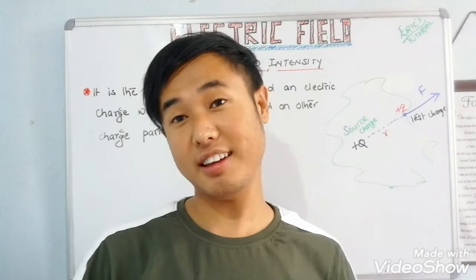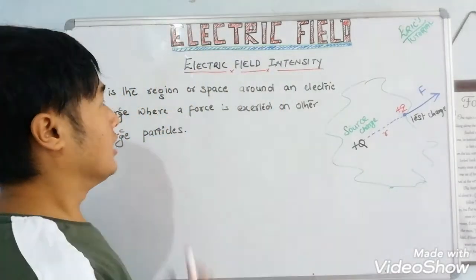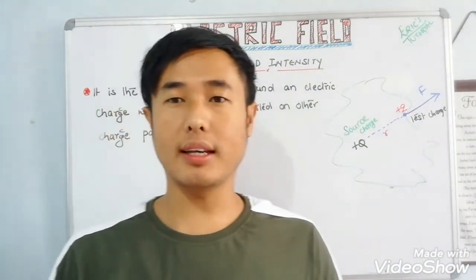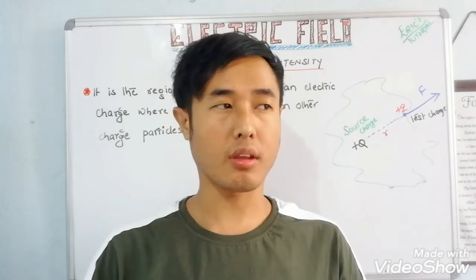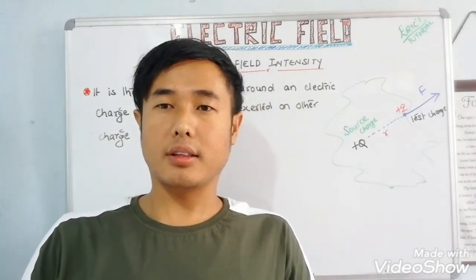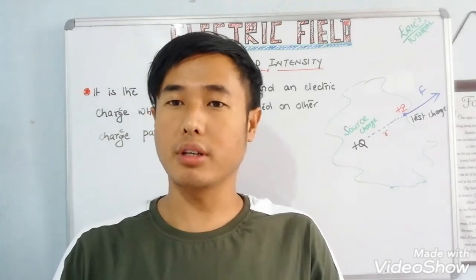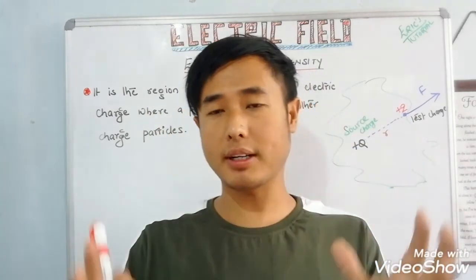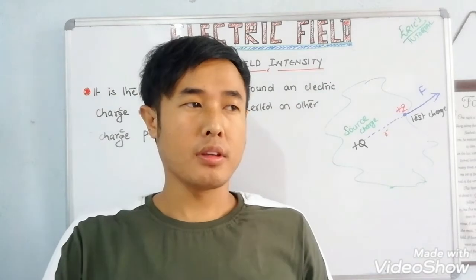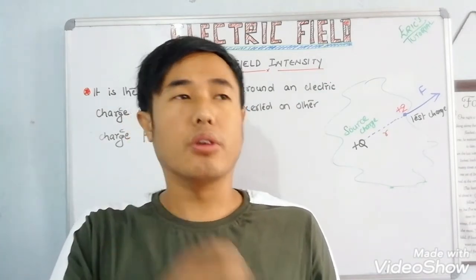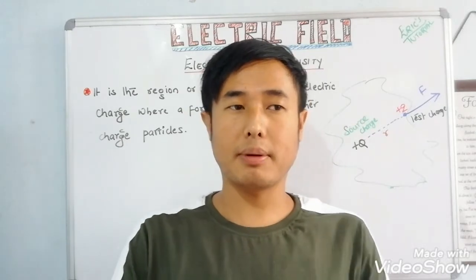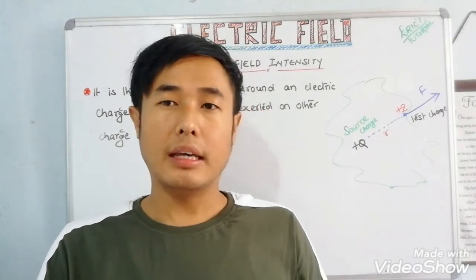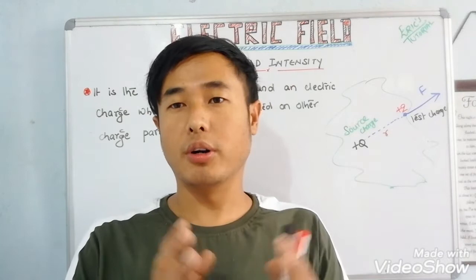To understand electric field: when a body is electrically charged, there will be two types of charges. We know one is positive charge and one is negative charge. If the body loses electrons it will be positively charged, but if it gains electrons that body is negatively charged.